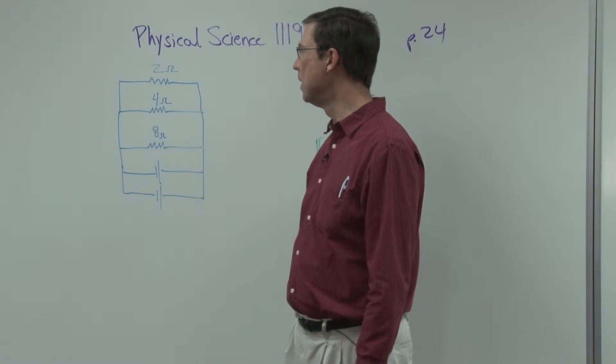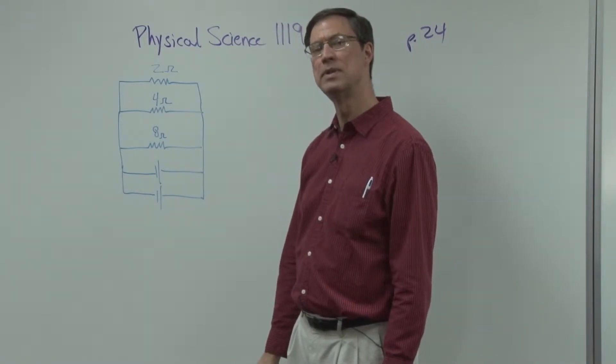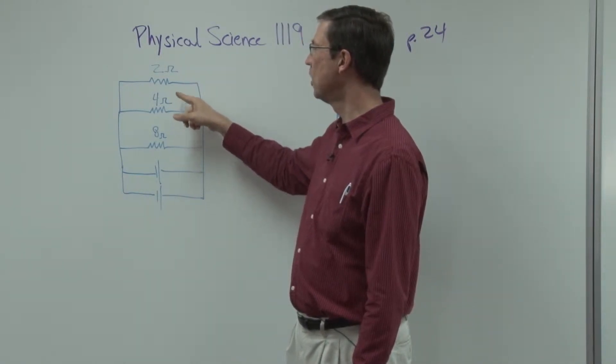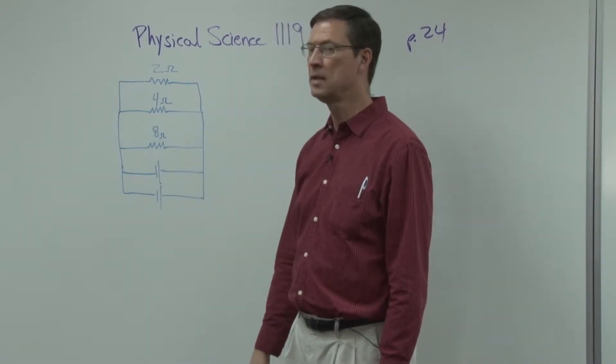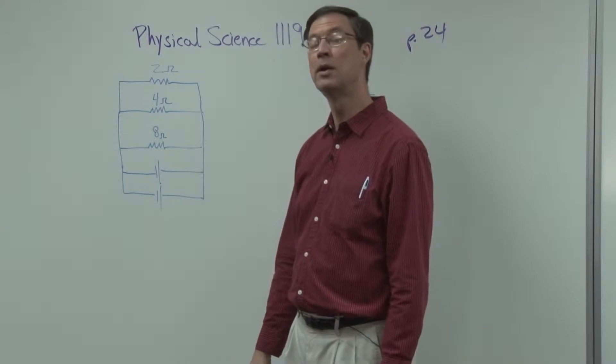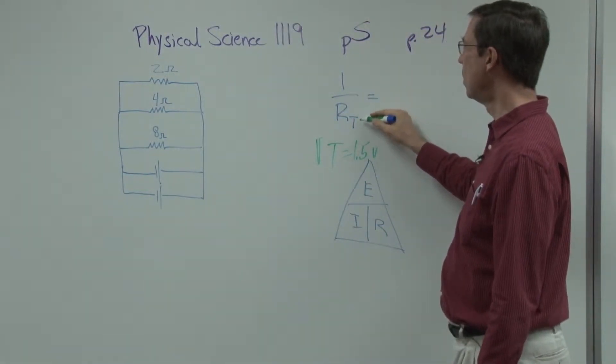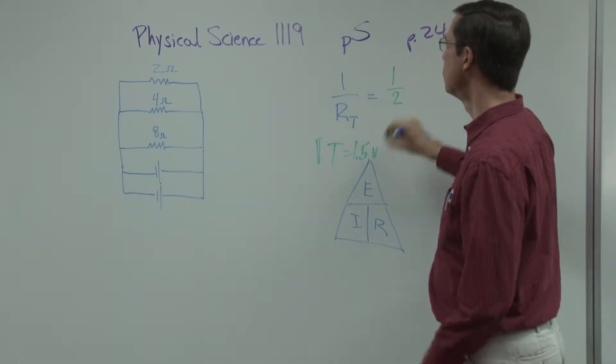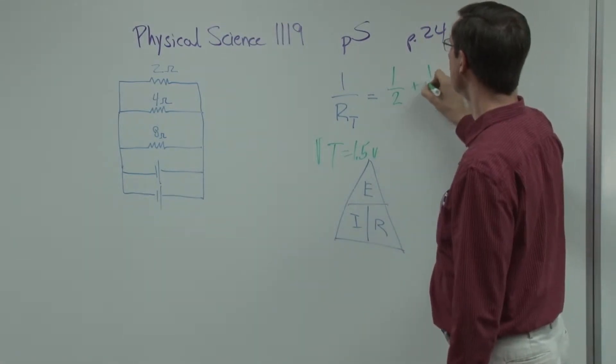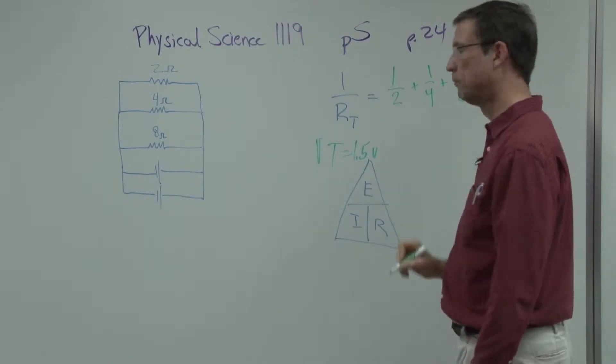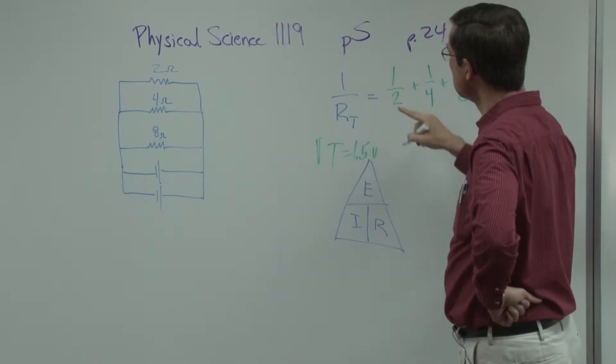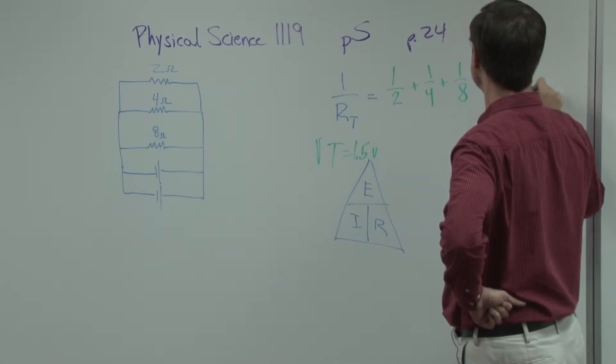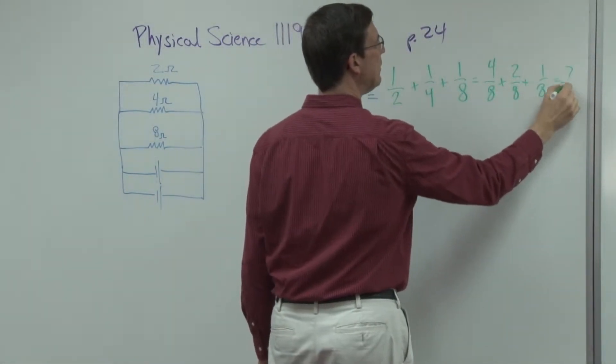Now because we have three of them, we're going to see what actually happens to the resistance. In the series, we would add these together, remember? So I'd have eight plus four is 12, plus two is 14, and I'd have 14 ohms. That's not what happens in parallel circuits. The formula is one over R total, so the total resistance is going to be 1 over the first one, 1 over 2, plus 1 over 4, plus 1 over 8. Now you can use your calculator, but in this case, I see that this is same as 4 over 8, plus 2 over 8, plus 1 over 8, which is 7 over 8.